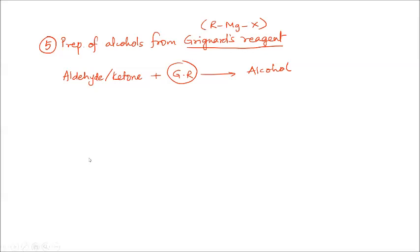Let us take a general example of an aldehyde or ketone, which will have a carbonyl group present. Aldehyde or ketone contains this carbonyl group. When a carbonyl group reacts with RMgX (Grignard's reagent), the Grignard's reagent has two ends: R is the negative part and MgX is the positive part.